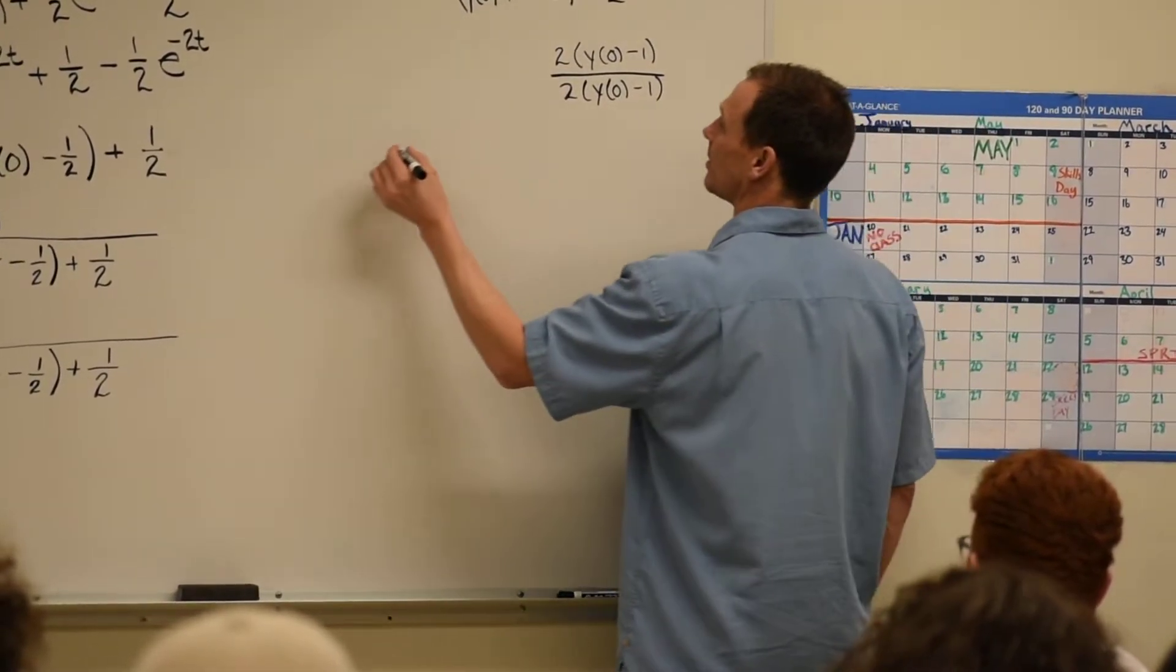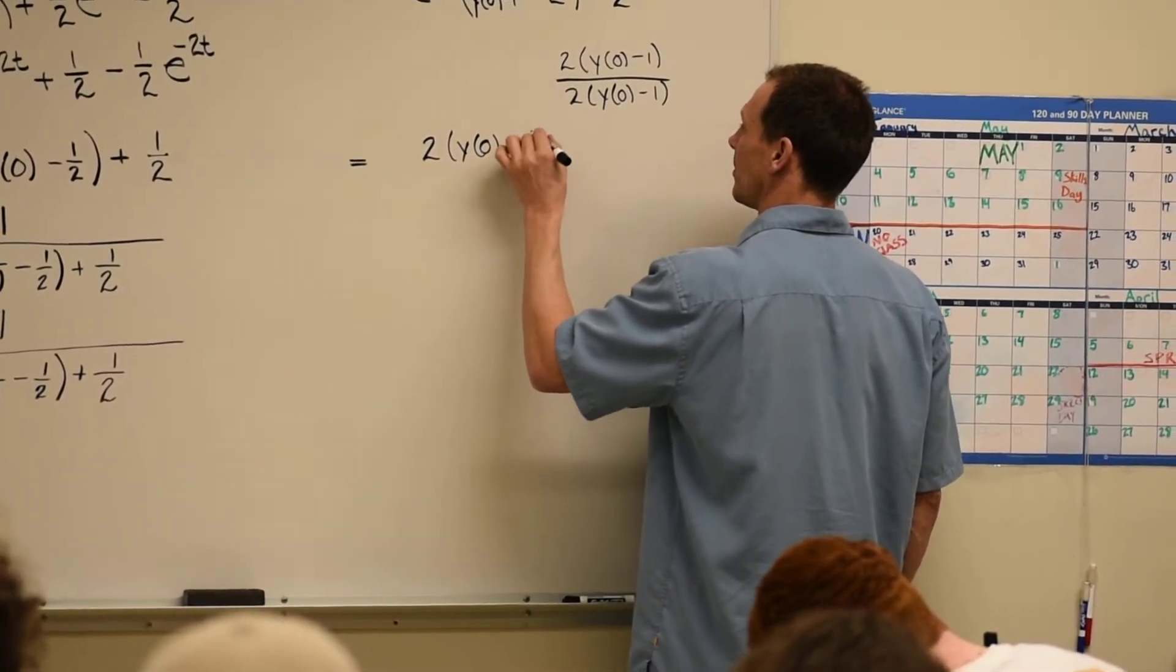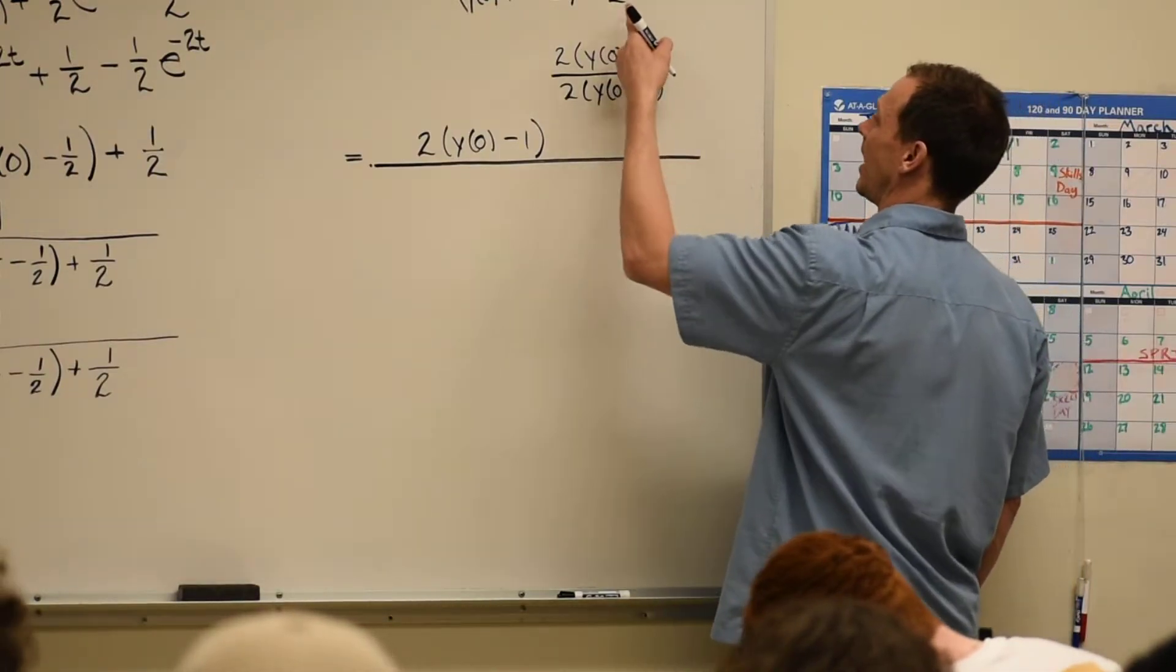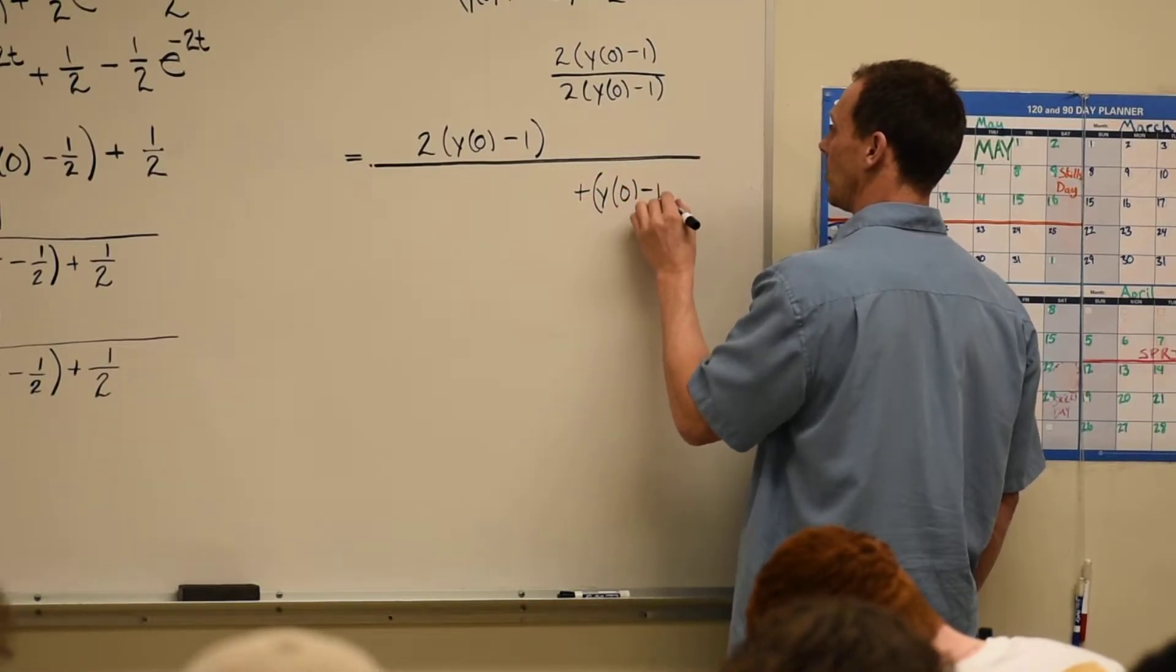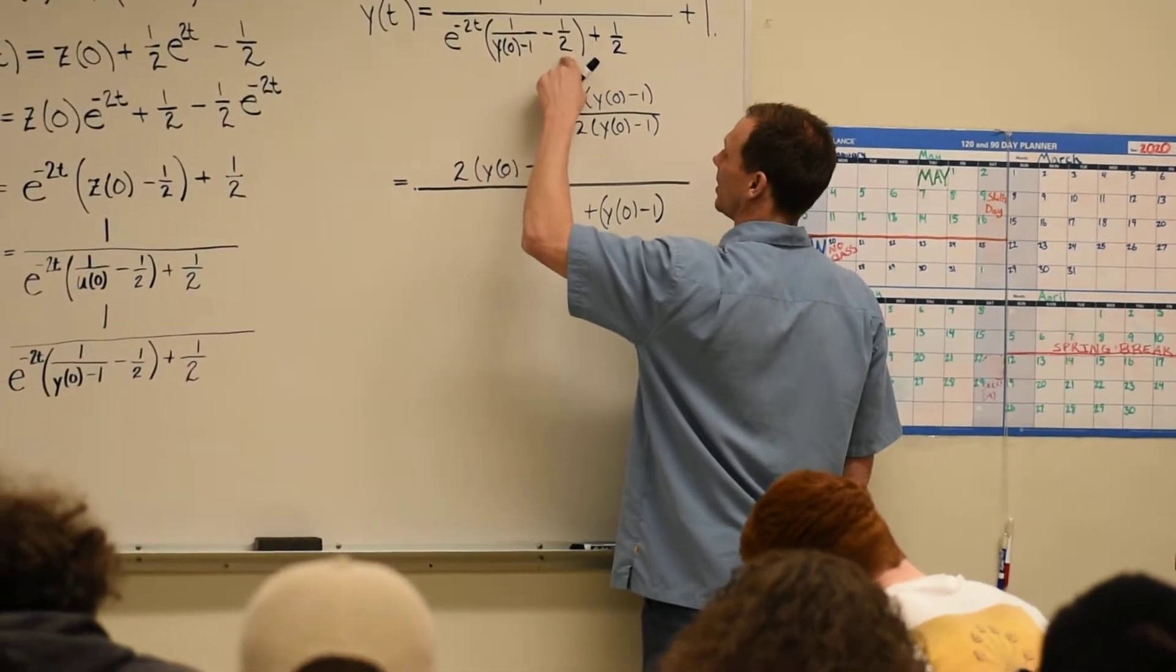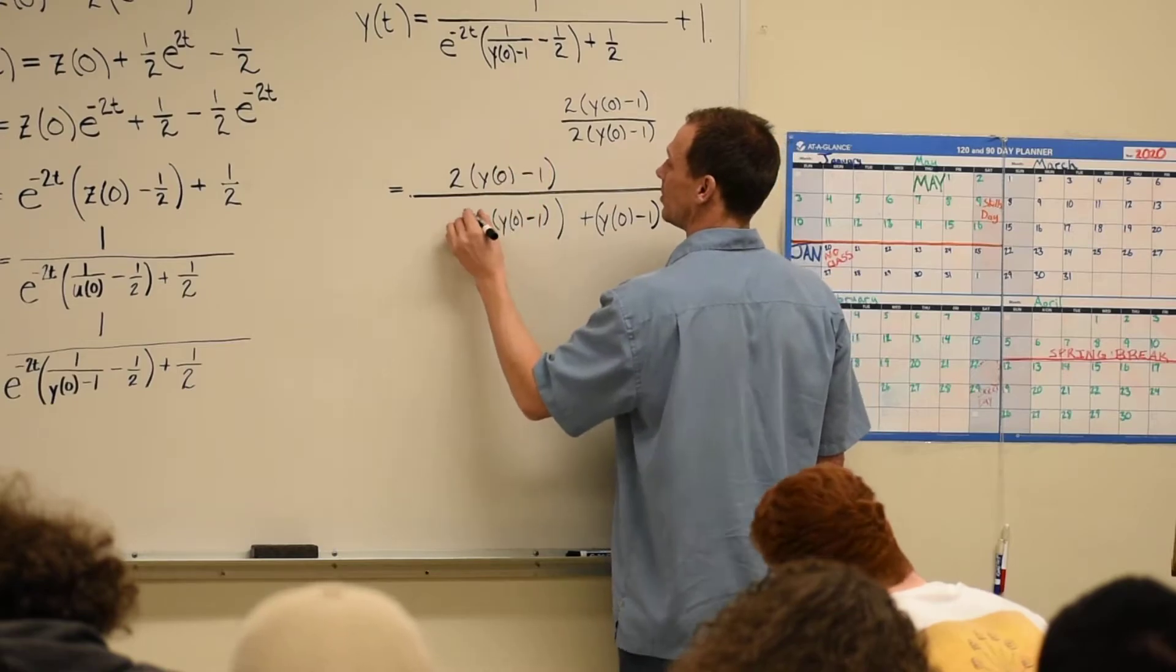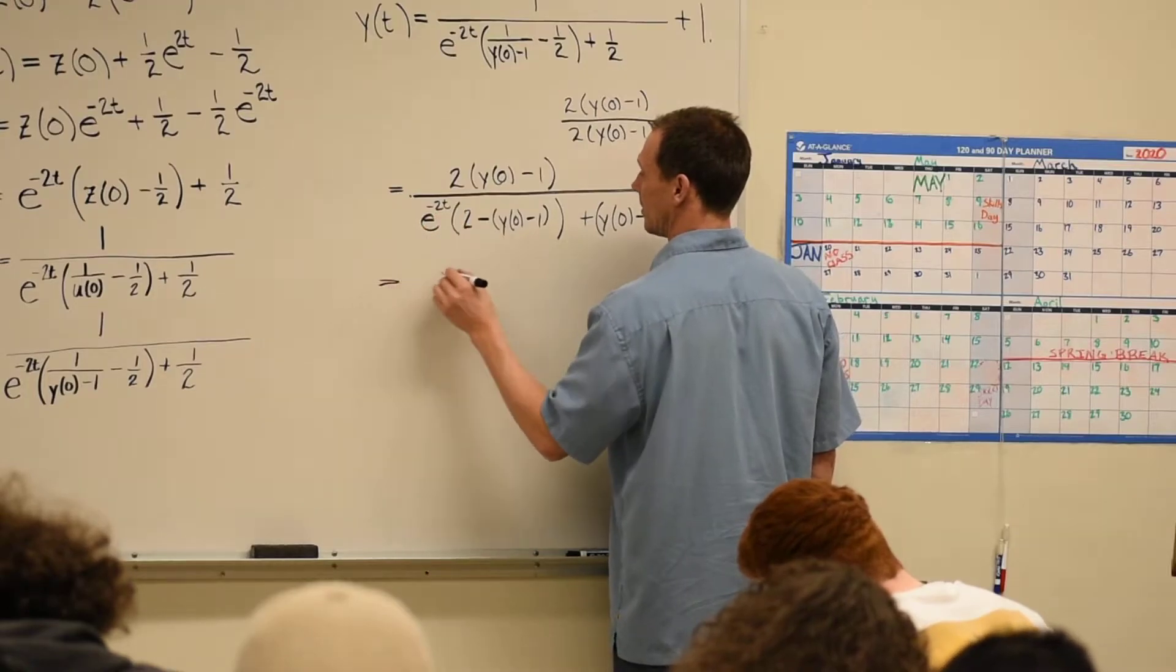and we multiply both top and bottom by 2 times Y of 0 minus 1. So, in the numerator, let's just try this for a moment. I would get 2 times Y of 0 minus 1. In the denominator, though, so this 1 half is going to be Y of 0 minus 1. And then when I multiply by 8 through here, this is going to pick up from Y of 0 minus 1. And then, this is going to become 2, E to the minus 2T.